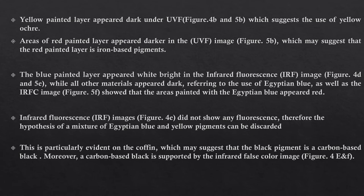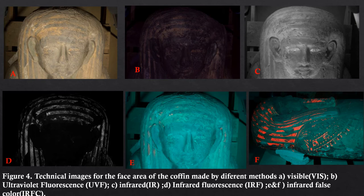This is particularly evident on the coffin, which may suggest that the black pigment is a carbon-based black. A carbon-based black is supported by infrared false color analysis. Figure 4 shows technical images for the face area of the coffin by different methods: visible light, ultraviolet fluorescence, infrared fluorescence, and infrared false color.